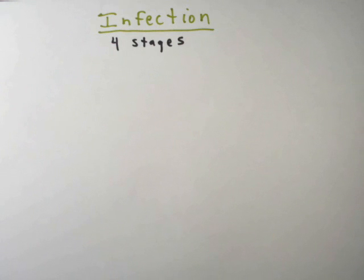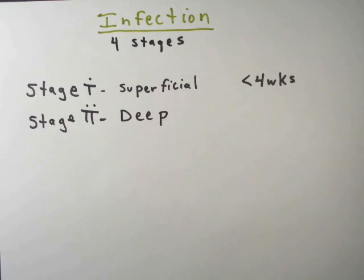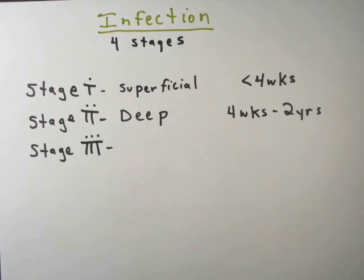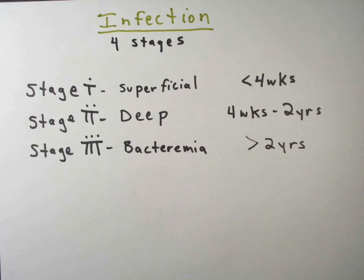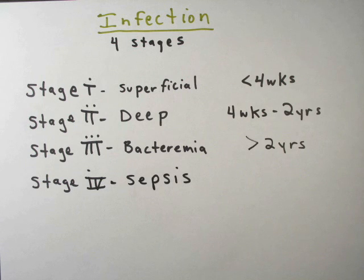There are four stages of infection. Stage 1 is an acute infection occurring up to four weeks after surgery. Stage 2 is a delayed deep infection occurring four weeks to two years after surgery. Stage 3 is an acute infection occurring more than two years after surgery. Stage 4 is an acute infection, either deep or superficial, that turns into sepsis.